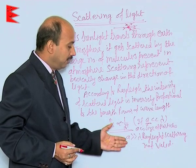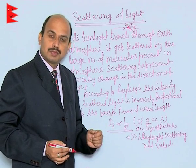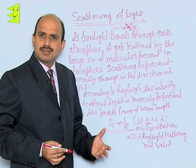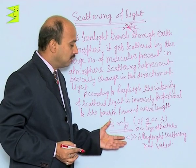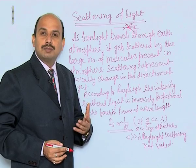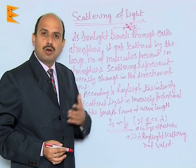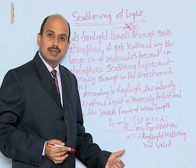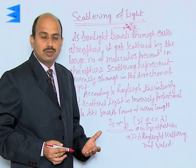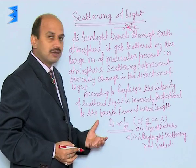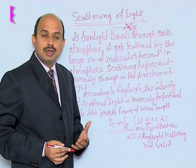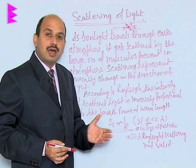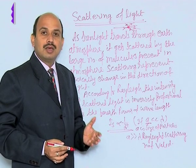If 'a' is much greater than lambda, as in the case of clouds, then all colors are scattered. Because of this, the color of clouds is white — all colors get scattered equally. When 'a' is much greater than lambda, Rayleigh's scattering is not valid. This is the concept of Rayleigh's scattering, and it also explains why danger signals are red and why the sun appears red during sunset and sunrise.